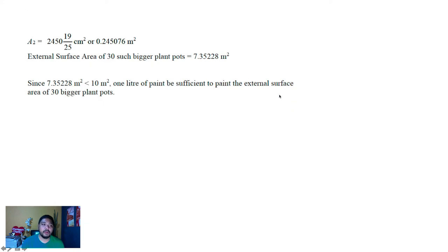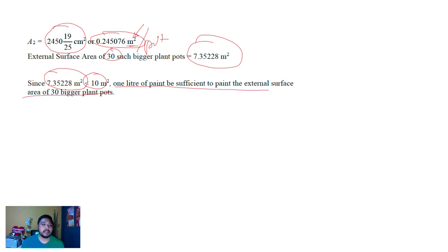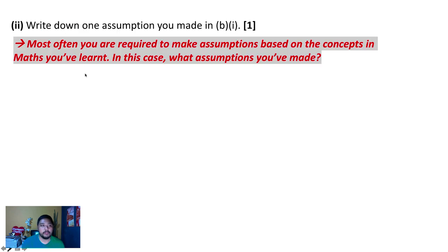This is not the end — you need to convert your answer into meters squared. You have found the external surface area for one pot. Multiply by 30 to get the total for 30 pots. You get approximately 7.3528 m², which is less than 10 m². So yes, 1 liter of paint is sufficient because the total surface area is smaller than 10 m².